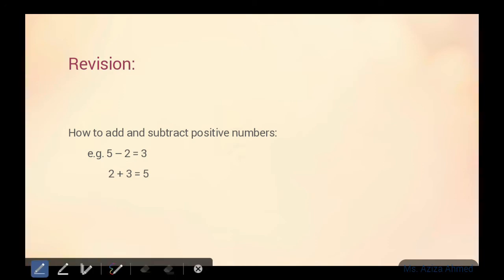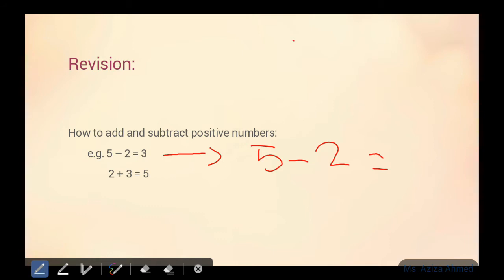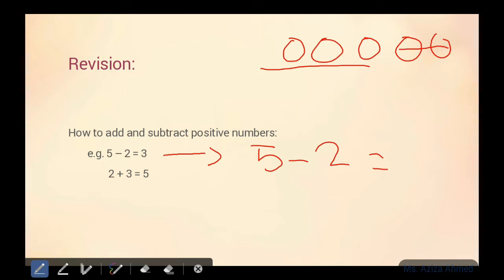For example, 5 minus 2. What does this subtraction mean? It means number 5 se number 2 ko khatam kar dena hai. Subtraction ka matlab hota hai kisi bhi cheez se kisi cheez ko remove karna. Toh number 5 se number 2 ko remove karna hai. For example, yahaan pe 5 circles hain, aur in mein se 2 circles ko remove karna hai. Toh remaining circles kitne bachay? 3.